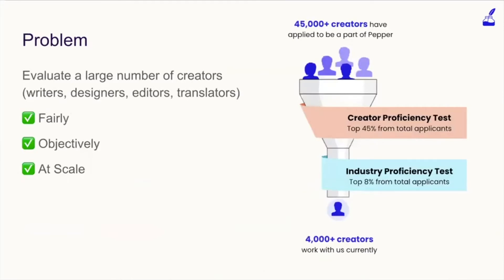One part of the big problem that Pepper Content faces is that since we work with a very large number of creators, we've got to evaluate them fairly objectively and at scale. To give you some perspective, almost 45,000 creators have applied to be a part of Pepper. They go through multiple rounds of evaluation, and overall we have about 4,000 creators that work with us now.